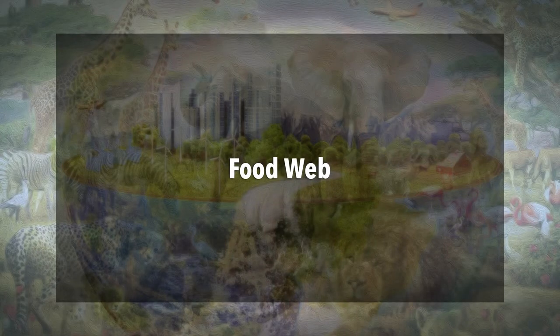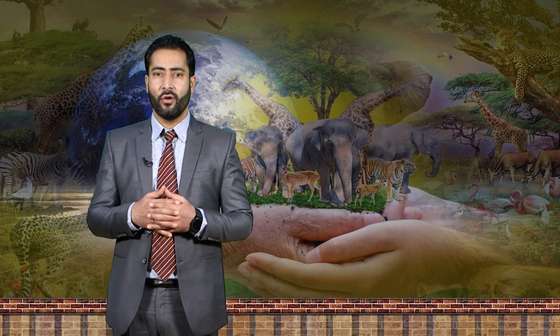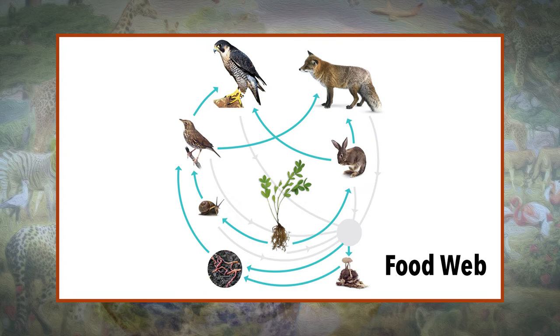Many interconnected food chains make up a food web. A food web shows a realistic representation of the energy flow through different organisms in an ecosystem. Sometimes a single organism gets eaten by many predators or it eats many other organisms. This is when a food chain doesn't represent the energy flow properly because there are many trophic levels that interconnect — this is where a food web comes into place. Species are related by their feeding behavior in food chains or food webs.